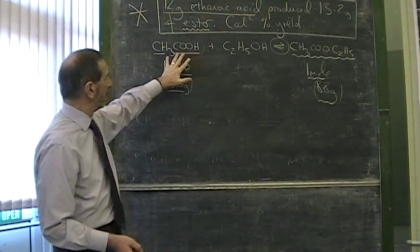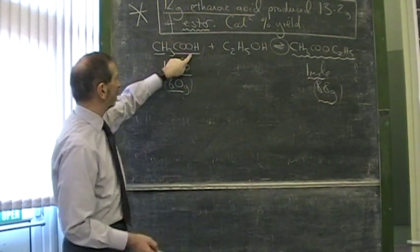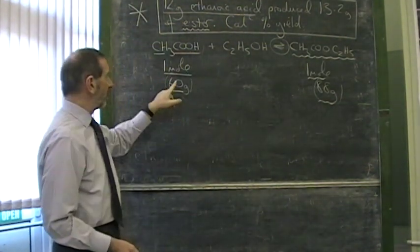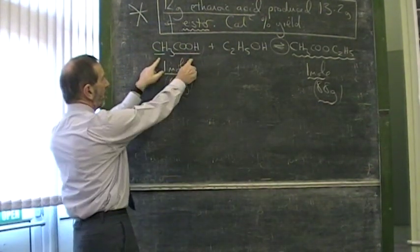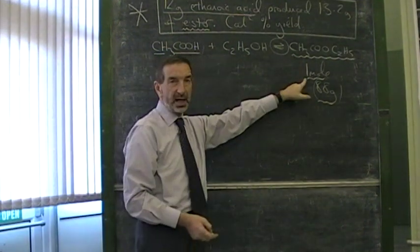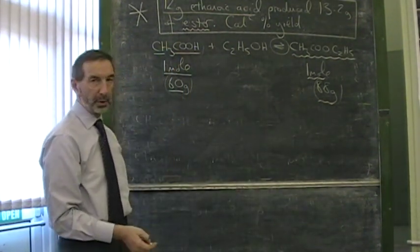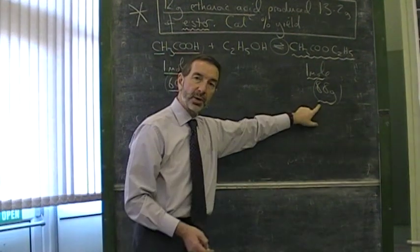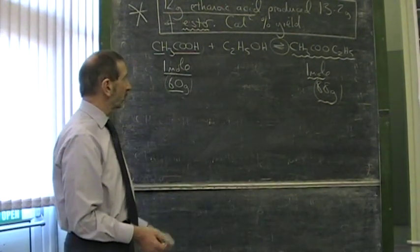You're probably given the equation. There's our ethanoic acid, there's our ester. Also, we know from this equation that one mole of the acid gives one mole of the ester. Also probably told that one mole of the acid weighs 60 grams and one mole of the ester weighs 88 grams.